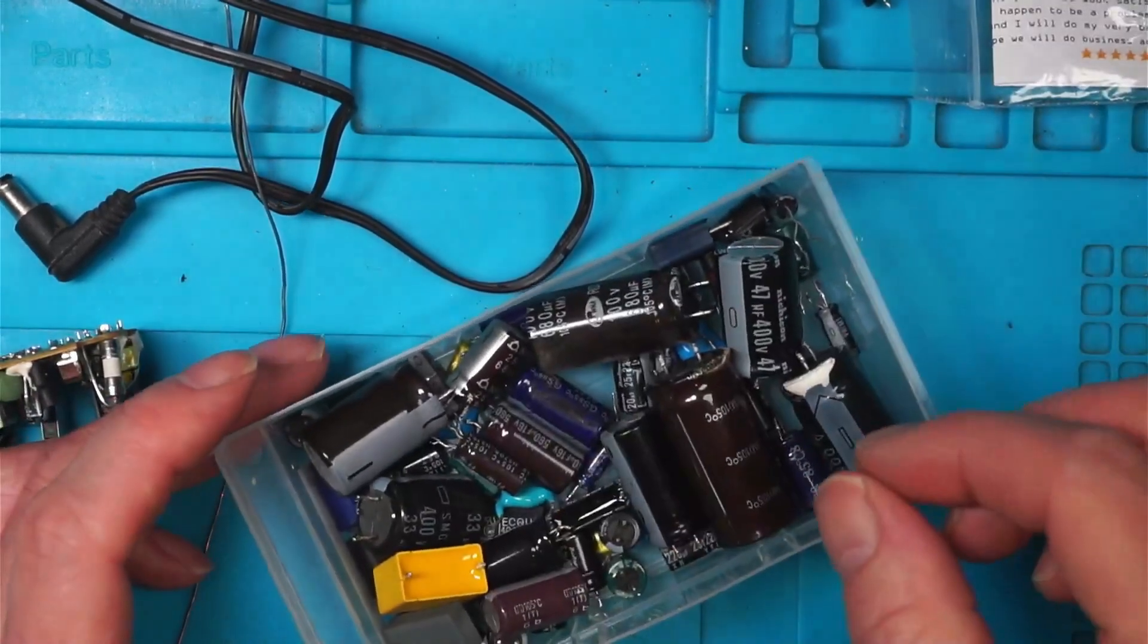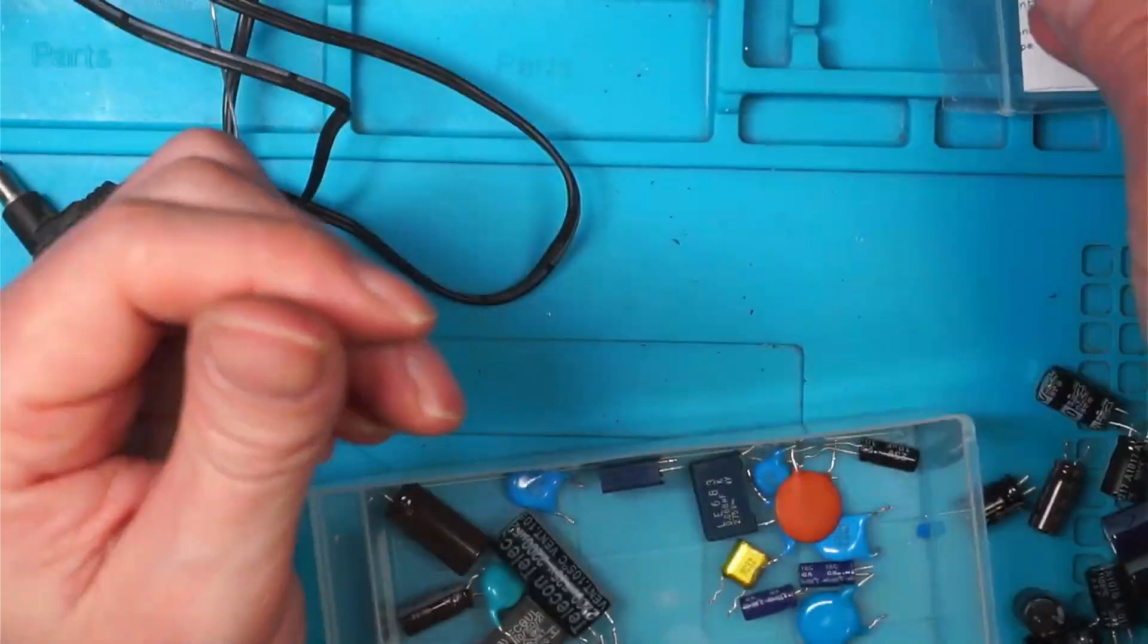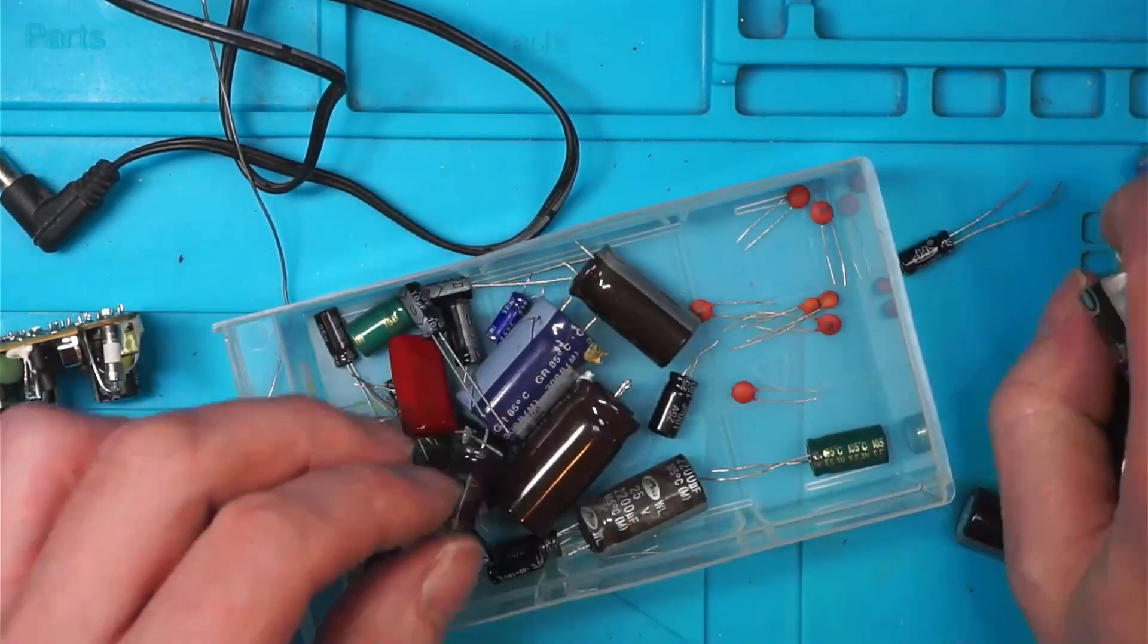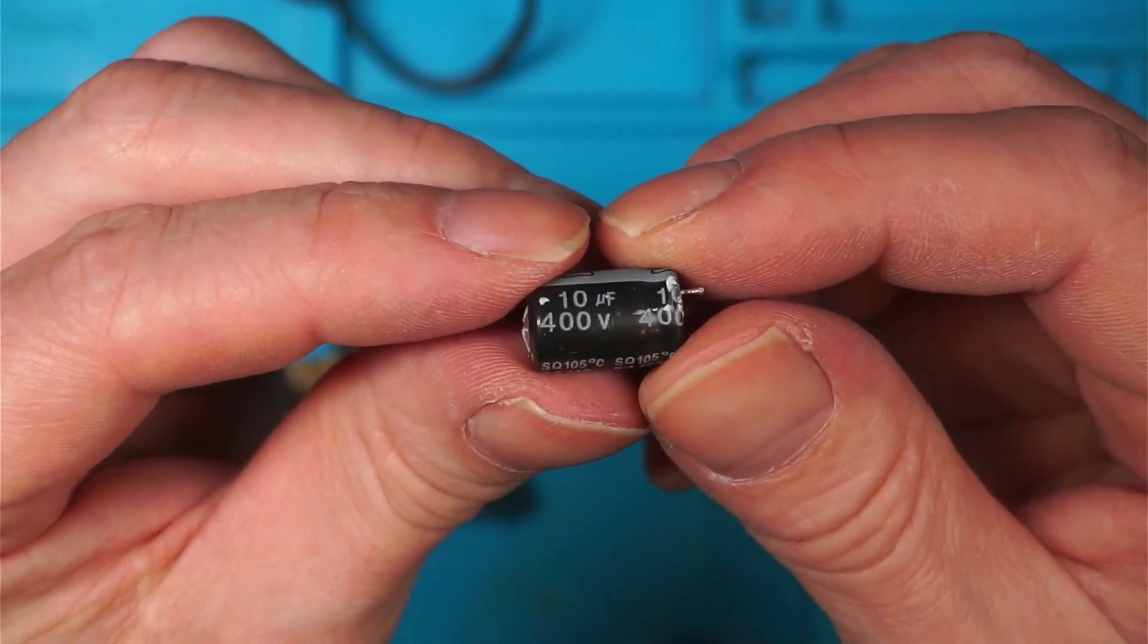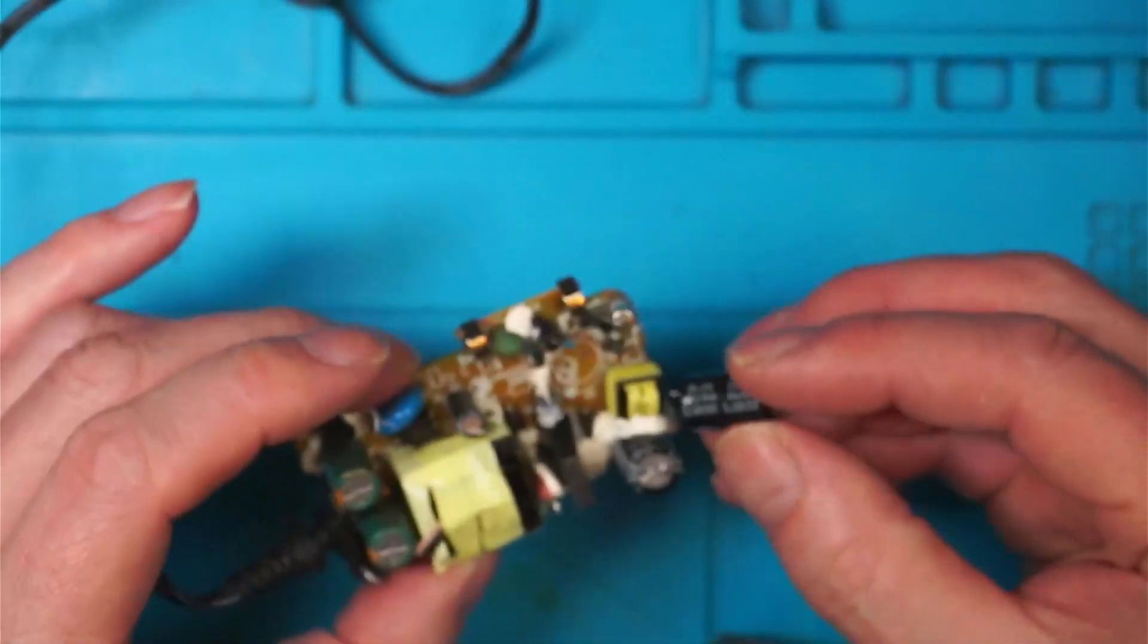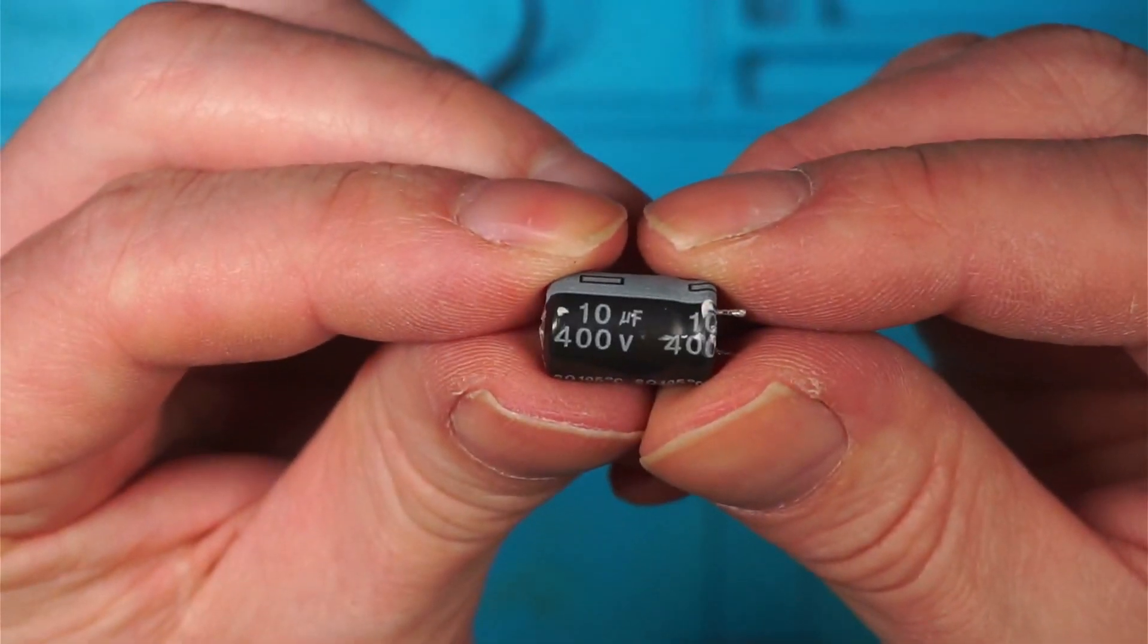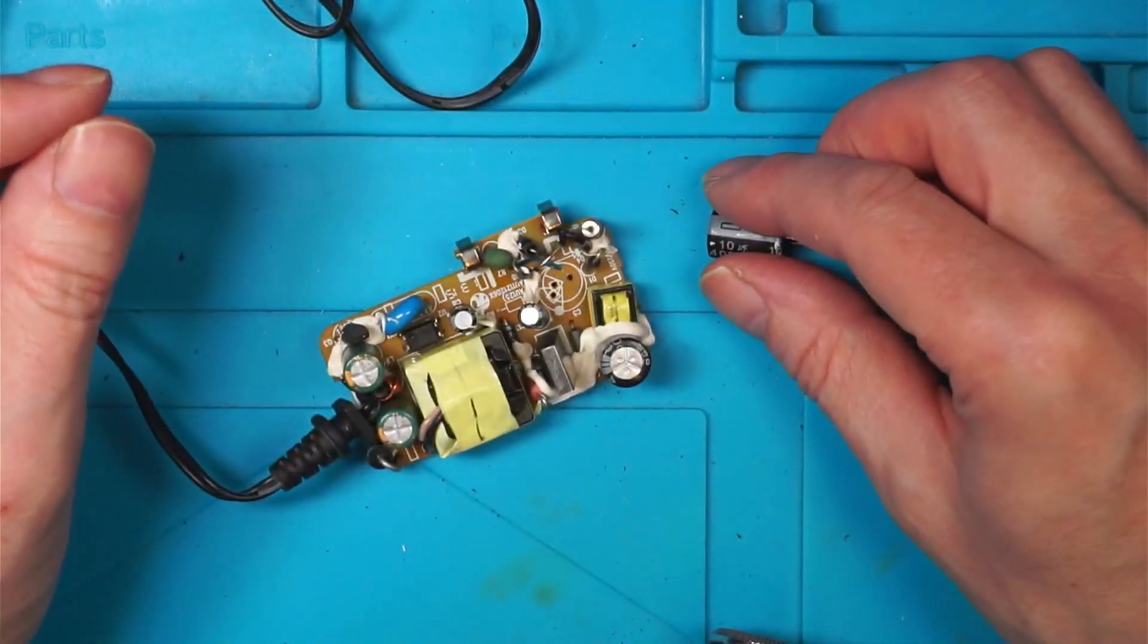I've got a box of caps that I've been salvaging from old boards. It looks like I'm going to have to order some of these and see if I can get it fixed. It's a shame, but never mind. Right. So I'm going to have to order some of these up from eBay. I need 10 microfarad 400 volts. So I'll do that now, and I'll be back in a second.